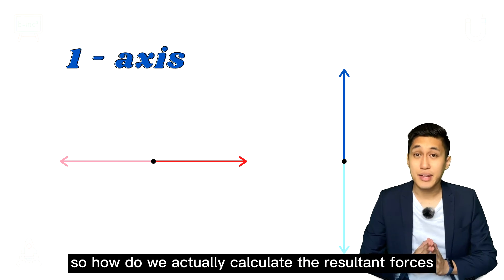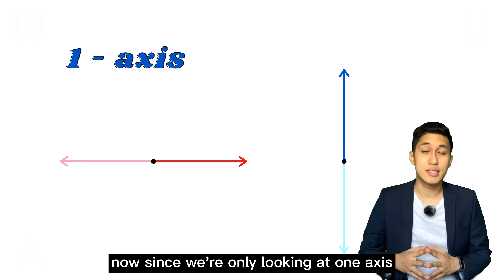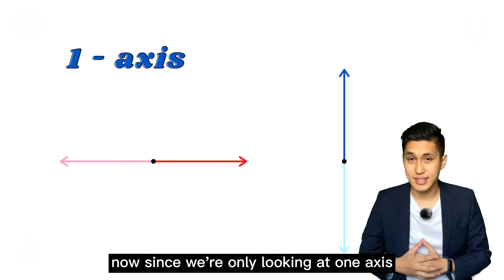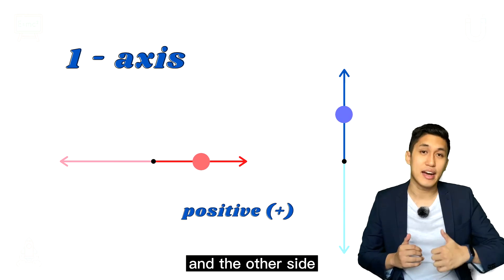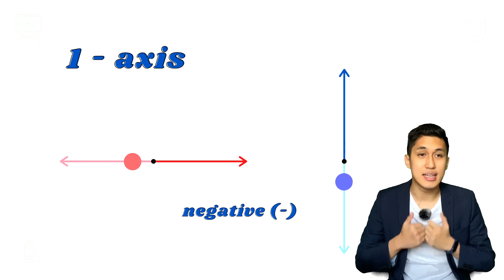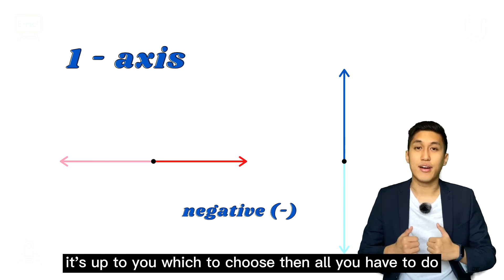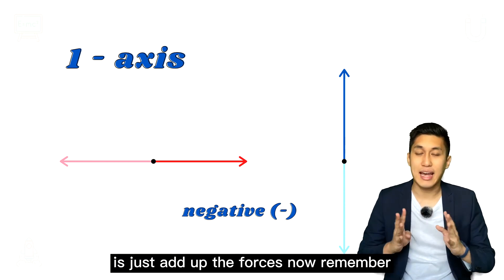So how do we actually calculate the resultant forces? Since we're only looking at one axis, we'll just choose one side of the origin as a positive and the other side as a negative. It's up to you which to choose. Then all you have to do is just add up the forces.